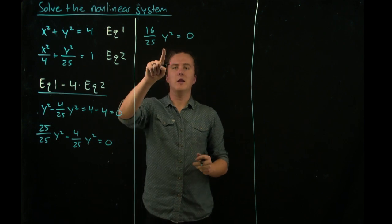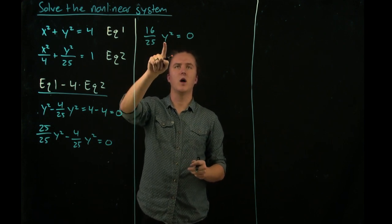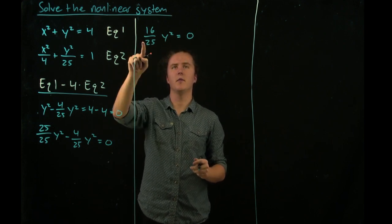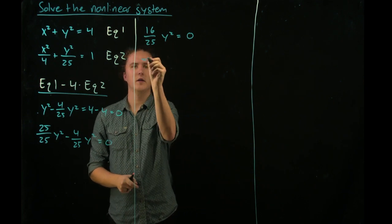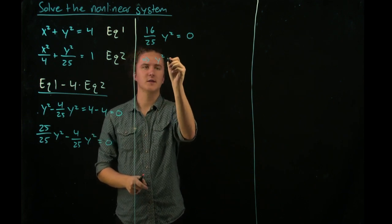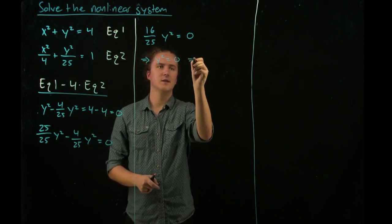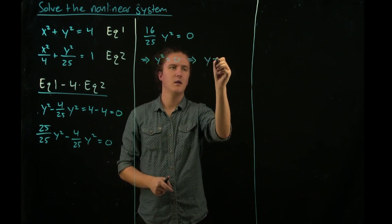At this point, we can easily conclude that y squared is 0 by multiplying by 25 over 16, and that tells us that y is equal to 0.